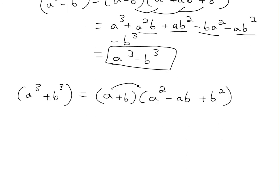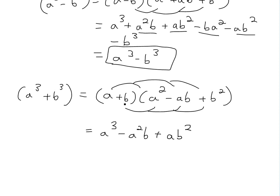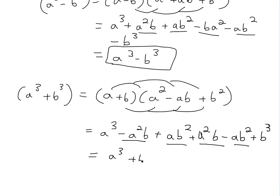You could also prove this by multiplying everything out, foiling it out. We'll get a cubed minus a squared b, then plus ab squared. Similarly with the b: plus a squared b, then minus ab squared, then plus b cubed. As you can see, there's a minus a squared b and a plus a squared b, and a minus ab squared and a plus ab squared — these all cancel. We're just left with a cubed plus b cubed.